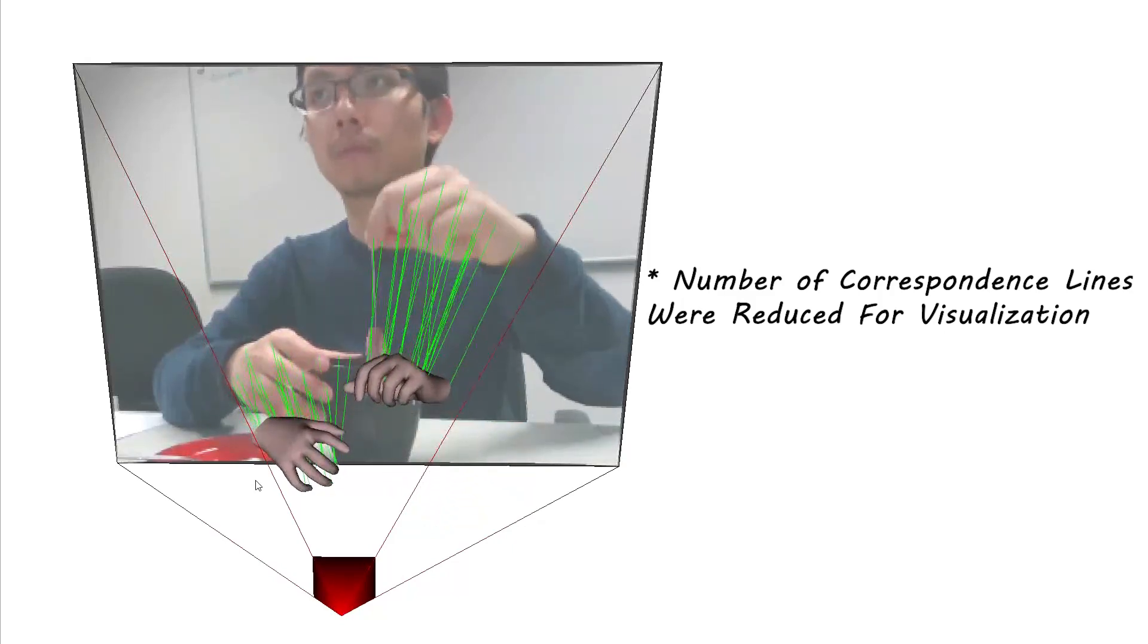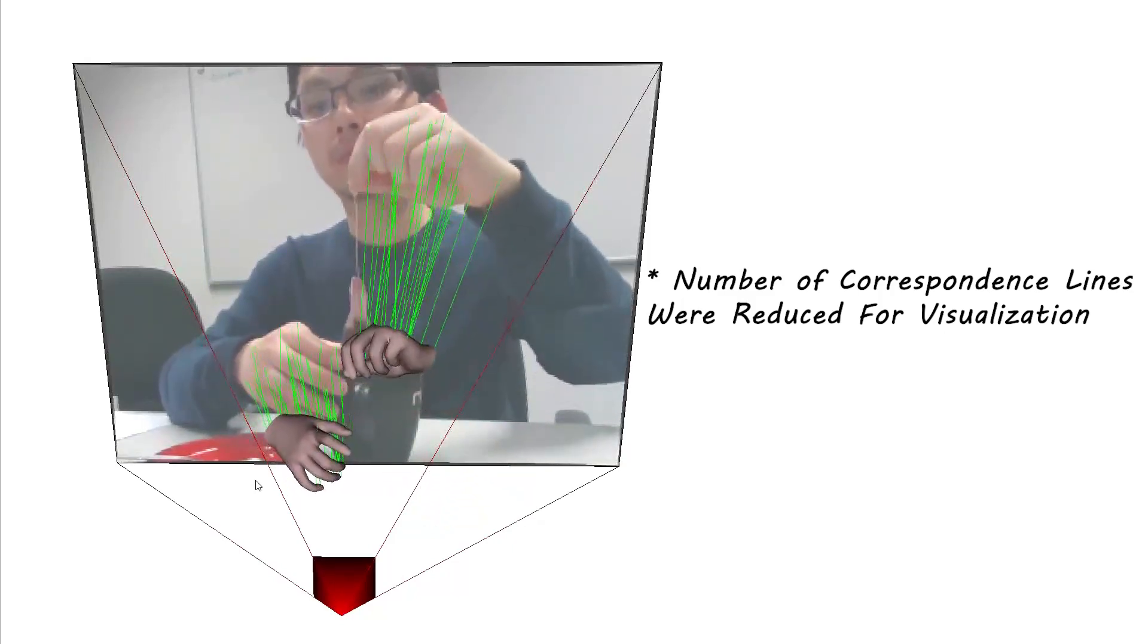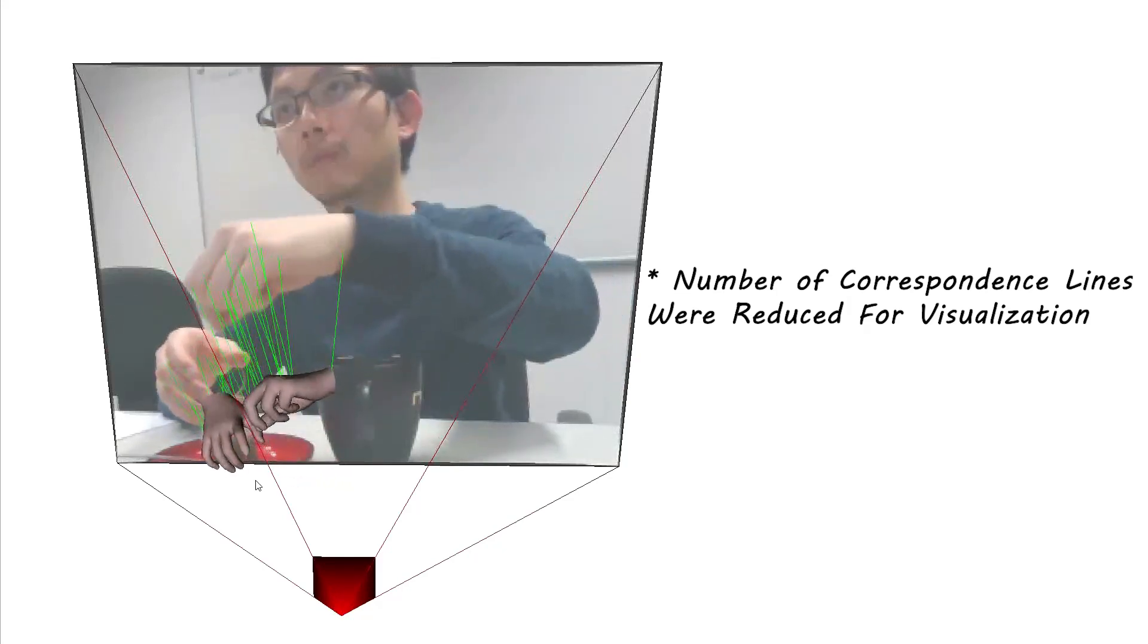Here, we visualize the dense matching map that establishes correspondences between 3D hand model vertices and pixels in the input image.